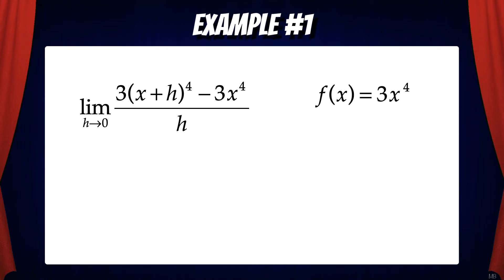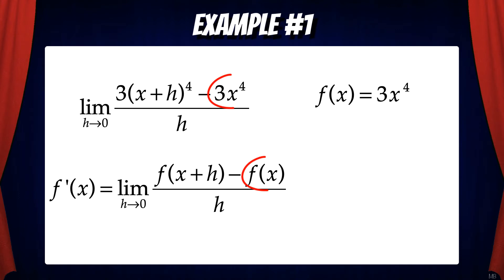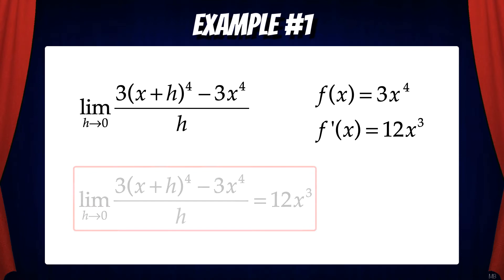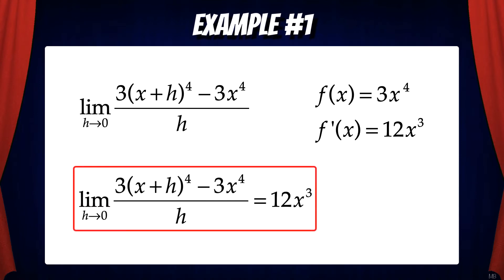Here the function is just three x to the fourth, and we know that because the last term in the numerator of the formal definition of a derivative is just f of x. Now that we know the function, we can use the power rule to find the derivative. The derivative of three x to the fourth is twelve x cubed. And since this entire limit equals the derivative of three x to the fourth, we know that it equals twelve x cubed.